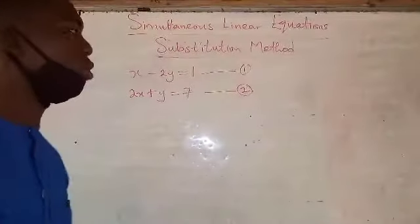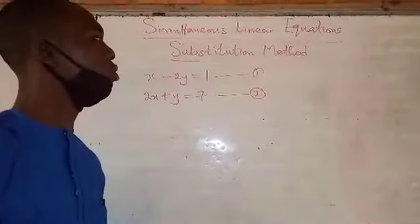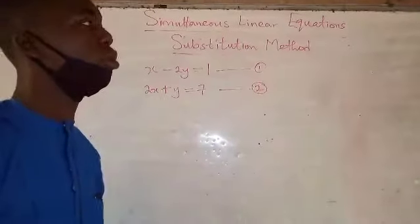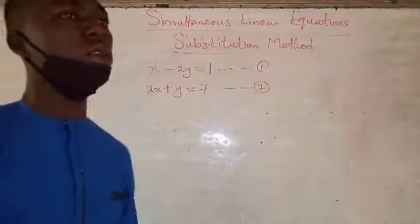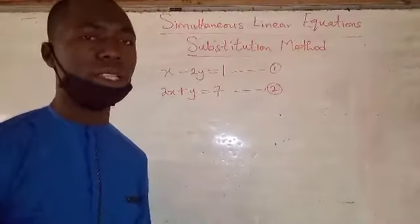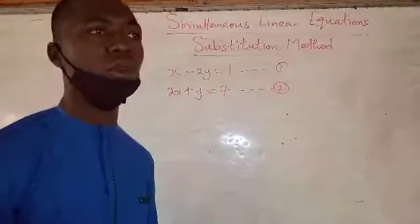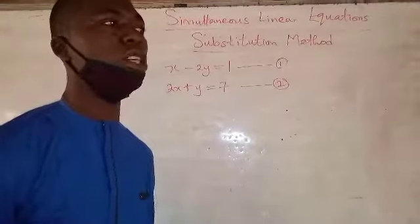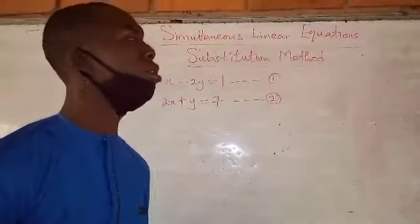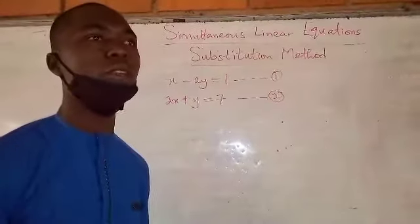Good morning viewers at home. Today we are going to take a look at simultaneous linear equations. The word simultaneous means two things happening at the same time, so when you have simultaneous equations it means you are solving two equations at the same time, and by doing that you are going to get the values of two different variables.